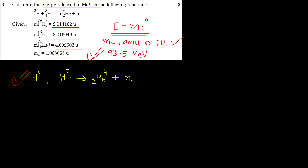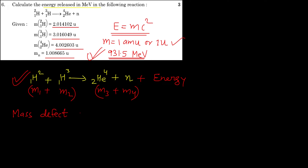Now, how will you find the mass defect? Energy is being released, so on the right side there is energy. Energy is released because of mass conversion — this actually violates the law of conservation of mass, since mass is being converted to energy. We calculate total mass on the left-hand side (m1 + m2) and total mass on the right-hand side (m3 + m4). Because some mass has been converted into energy, the total mass on the left will be slightly greater than on the right. The difference gives us the mass defect, represented by Δm.